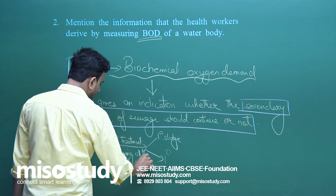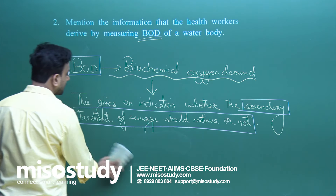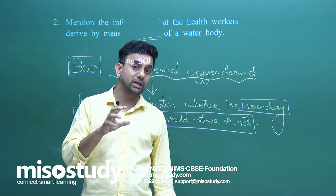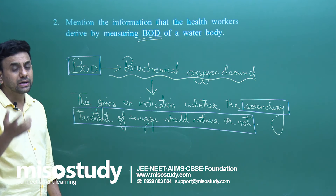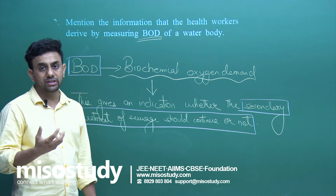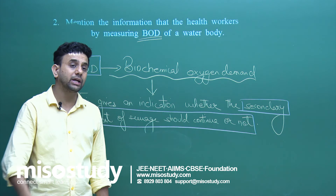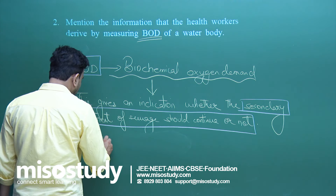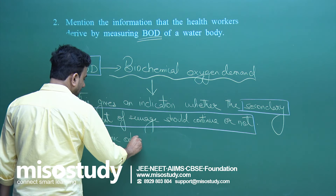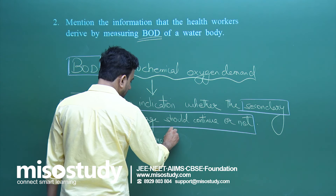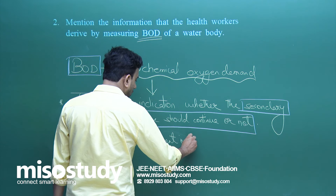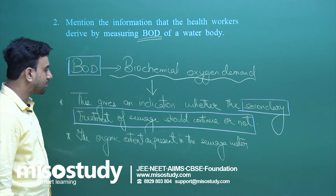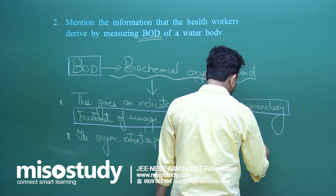After the primary treatment has been done and all the physical impurities have been removed, what remains in the sewage water is only the organic content or organic waste. The organic content is present in the sewage water after primary treatment.